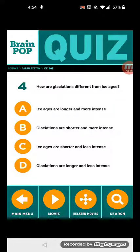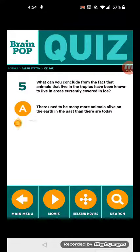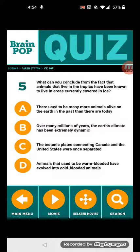Glaciations are shorter and more intense. Question 5: What can you conclude from the fact that animals that live in the tropics have been known to live in areas currently covered in ice? Over millions of years, the Earth's climate has been extremely dynamic.